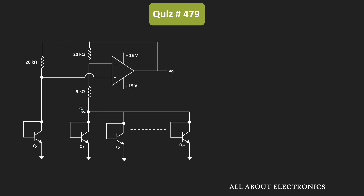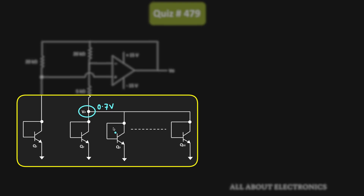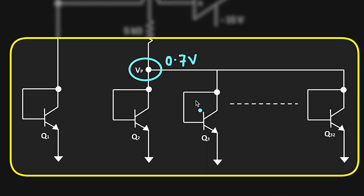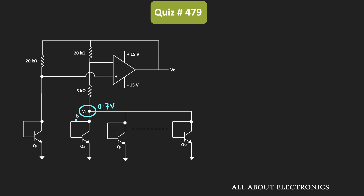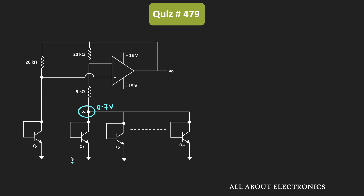The voltage at this node is equal to 0.7V. Now if you see, all the transistors are the diode-connected transistors, meaning that the collector and the base terminals of these transistors are connected together. That means the voltage at the collector and the base terminals will be the same, and the emitter terminal of these transistors is connected to the ground terminal.